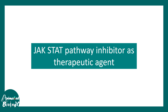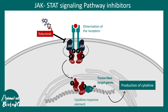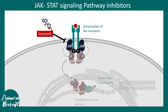The JAK-STAT signaling pathway is also an important therapeutic target. Specific inhibitors targeting this pathway reduce cytokine production. One such inhibitor is tofacitinib, used to treat autoimmune disorders like rheumatoid arthritis. Tofacitinib is a competitive inhibitor of JAK, rendering the entire signaling arm inactive and preventing cytokine production.